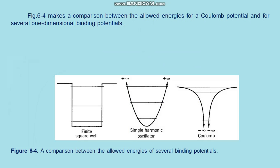The similarities are much more fundamental than the differences: for the Coulomb potential, as for any other binding potential, the allowed total energies of a particle bound to the potential are discretely quantized. Figure 6.4 compares the allowed energies for the Coulomb potential with several one-dimensional binding potentials, with the Coulomb potential represented on a cross-cut through the one-electron atom. Note that all binding potentials have a zero-point energy — in all cases the lowest allowed total energy is above the minimum value of the potential energy. Associated with this zero-point energy, the one-electron atom has zero-point motion.